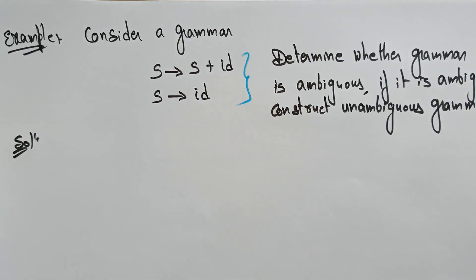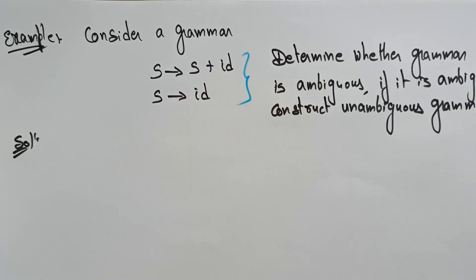How can you say that the given grammar is an ambiguous grammar? If the given grammar is generating more than one leftmost derivation, or one rightmost derivation, or even it is generating more than one parse tree. So let's check whether it is generating more than one parse tree or not.